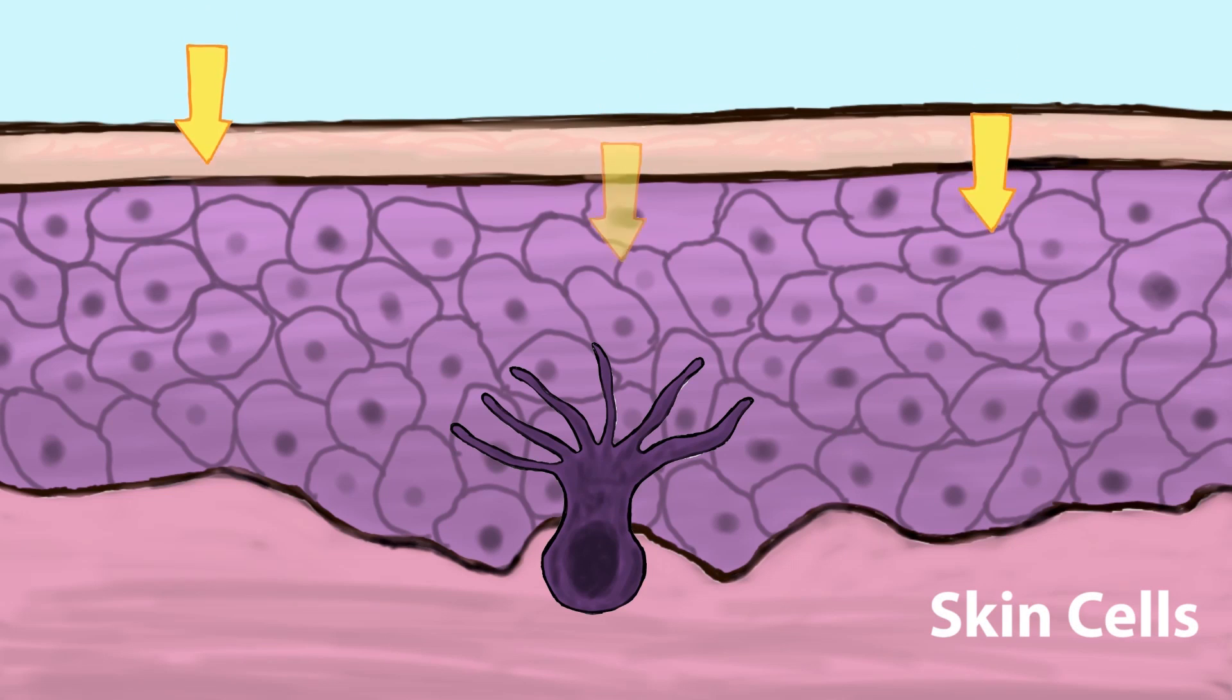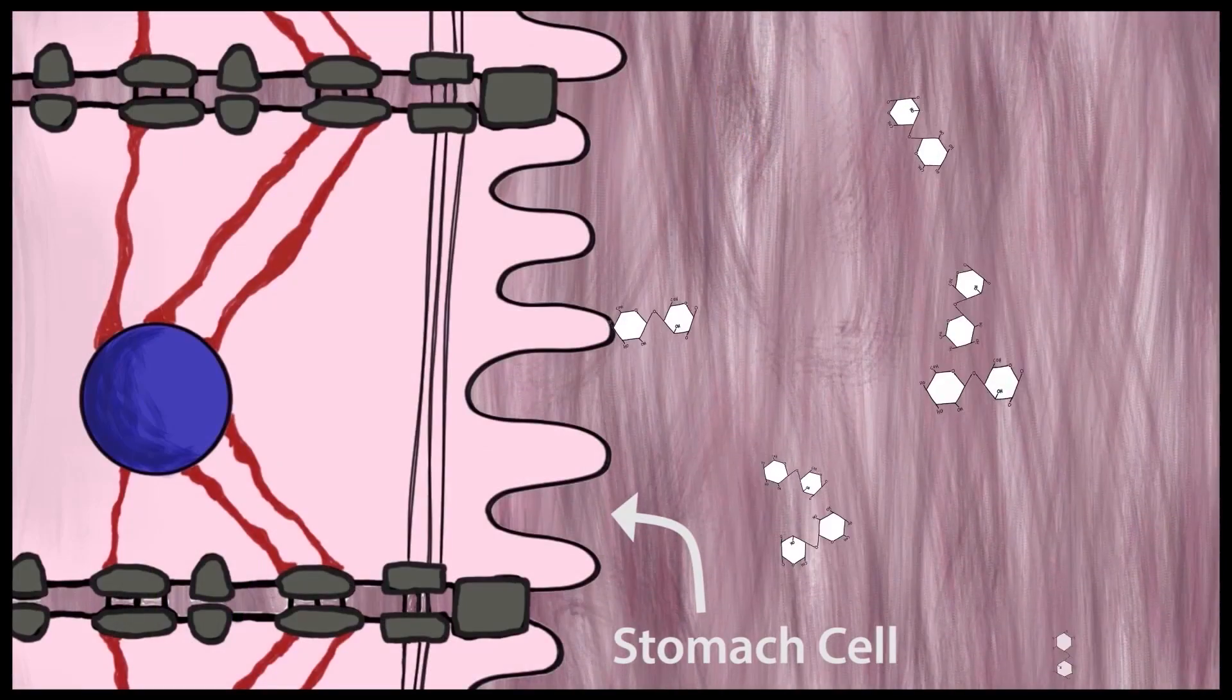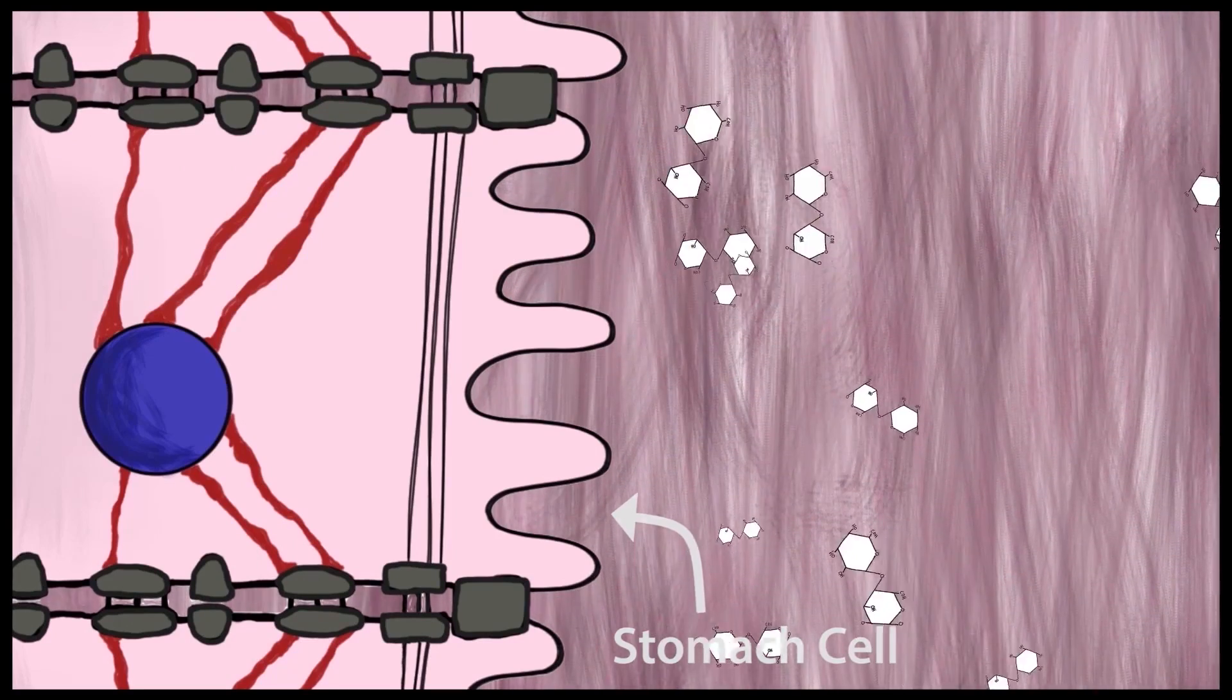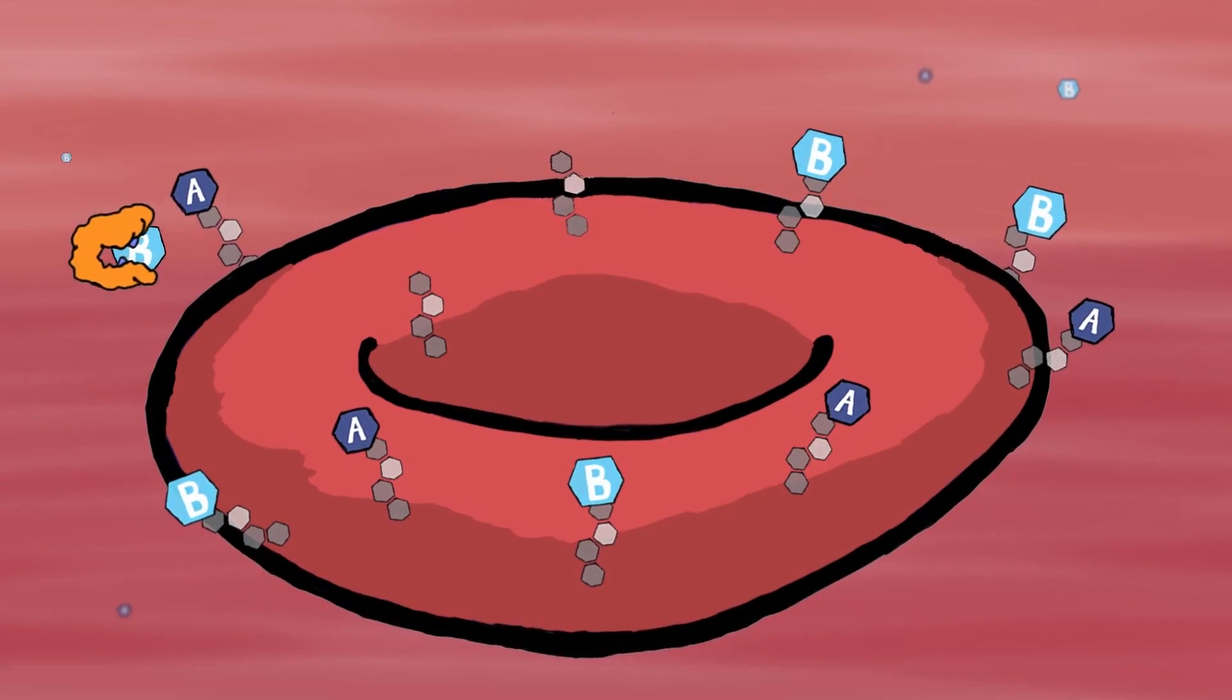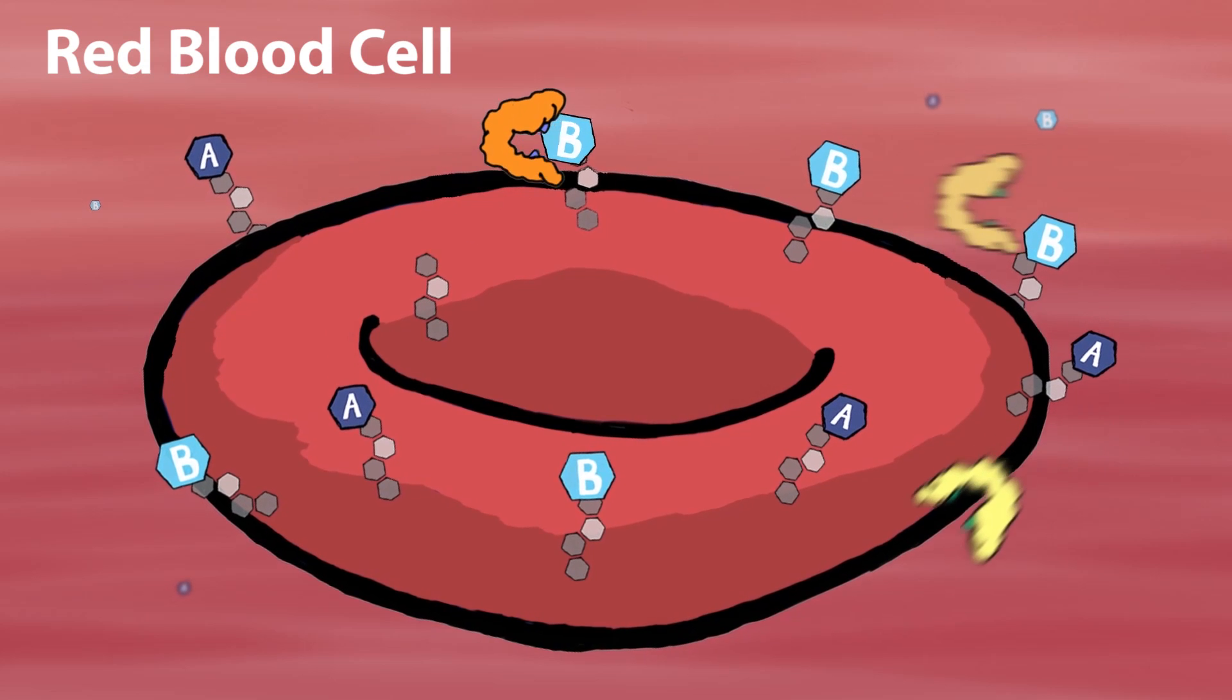Some are skin cells that use melanin to protect you from UV rays from the sun. Some are stomach cells that help you digest products that you eat and drink. Others are red blood cells that carry oxygen to all parts of your body.